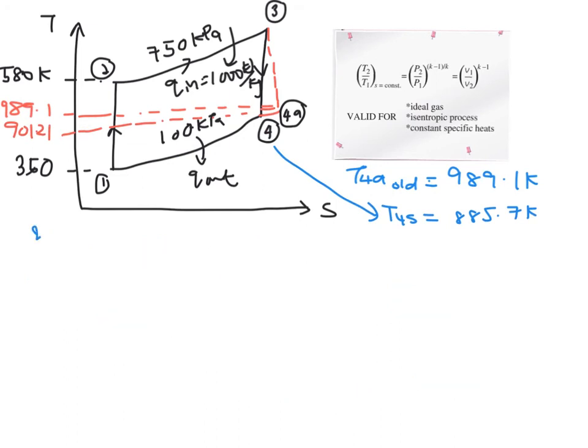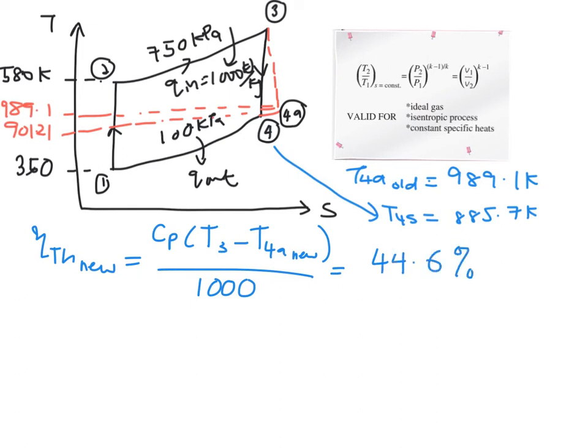So you see, when you solve for your thermal cycle efficiency for the new value of your T4a, 901.21 Kelvin, you will get 44.69%. So, the first part, or the old part, thermal cycle efficiency is 35.8%.